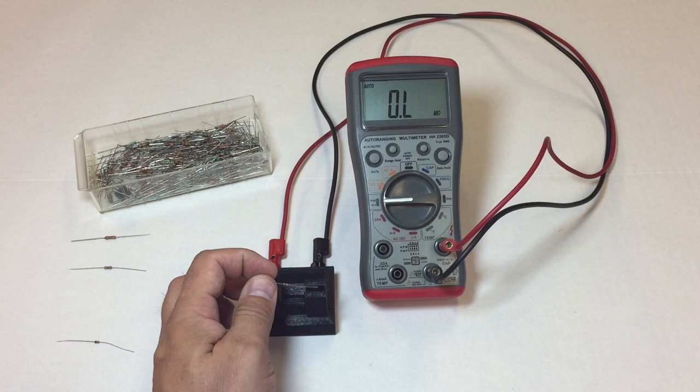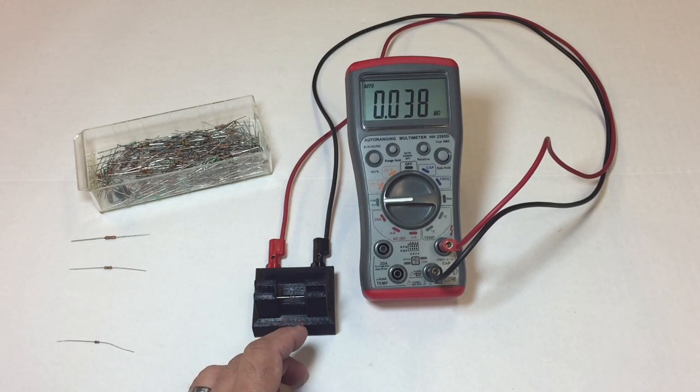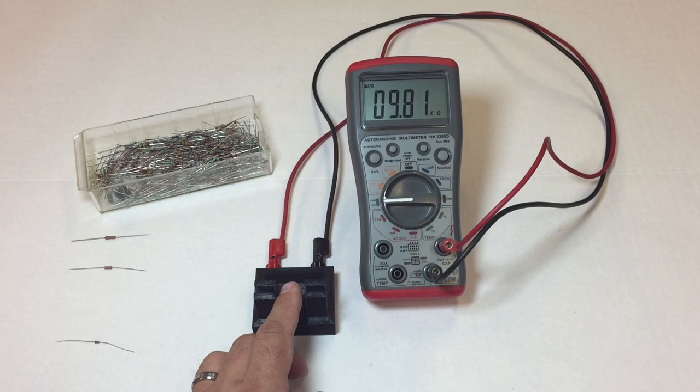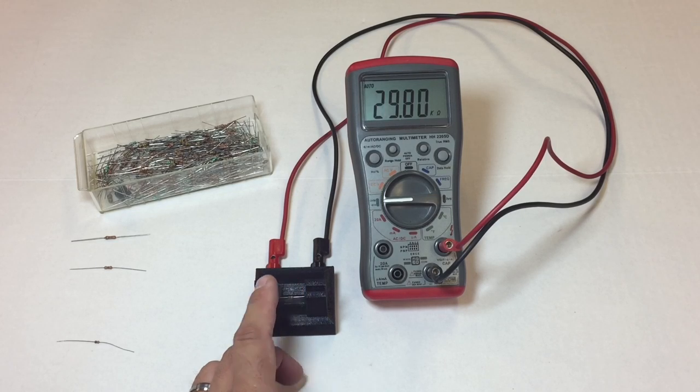So now let's try the next one. This should be a 10k. And this one will need a little pressure. This one says it's 9.85k. So that's a 10k. Now you may be wondering why isn't it showing 10k. Well it's because these are 5% resistors.